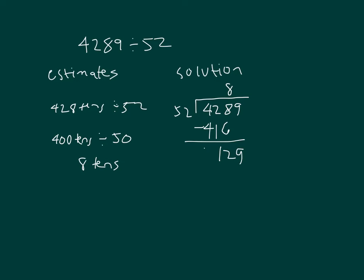And then so I have one hundred twenty-nine ones divided by fifty-two, in which case the answer to that is two. Two times fifty-two is one hundred four. And then so our remainder is twenty-five.